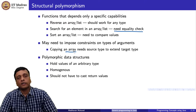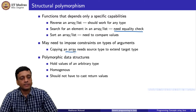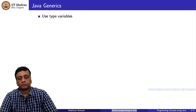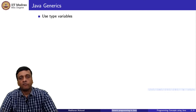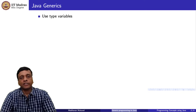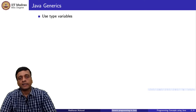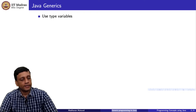All of these are addressed through Java's notion of generics. The main new feature that Java generics introduced is the use of type variables. The easiest way to understand type variables is to look at the examples we have already seen and see how they are written in generic form.